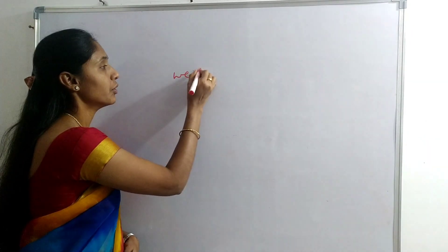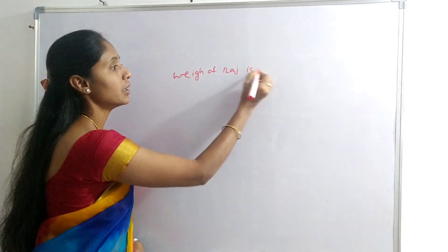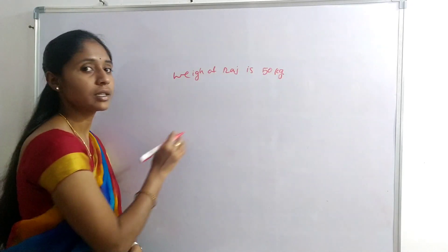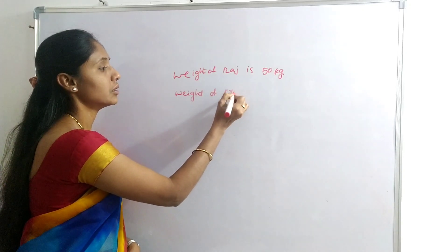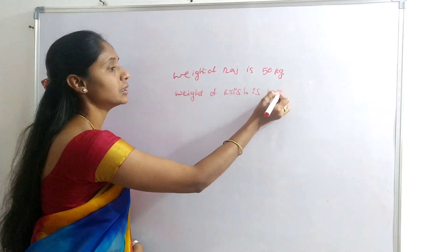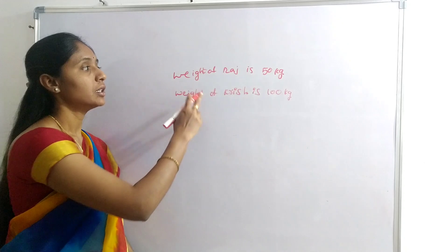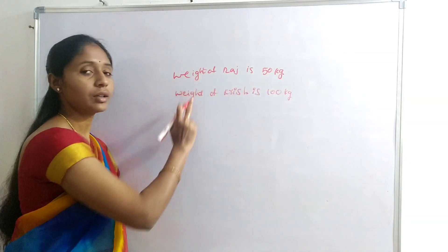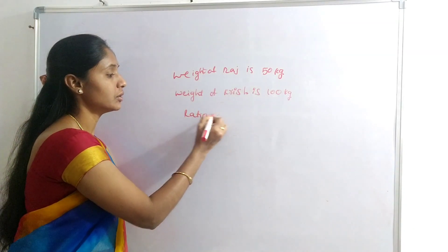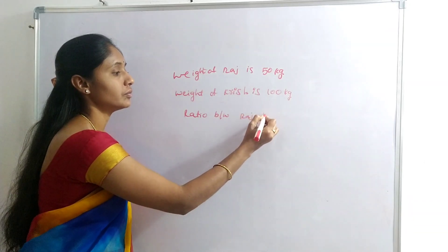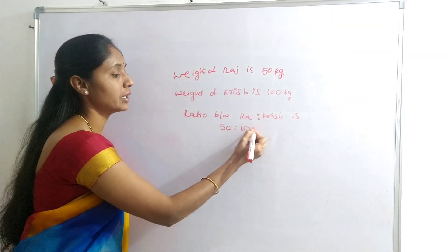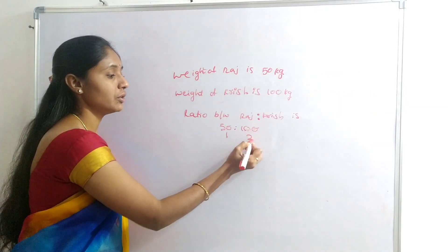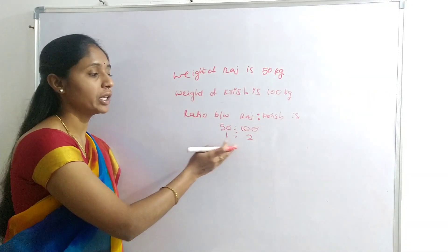All of you got the idea about ratio. For example, weight of Raj is 50 kg and weight of Krish is 100 kg. We can compare these two persons because weight is the common unit. Ratio between Raj and Krish is 50 kg to 100 kg, which simplifies to 1 is to 2.